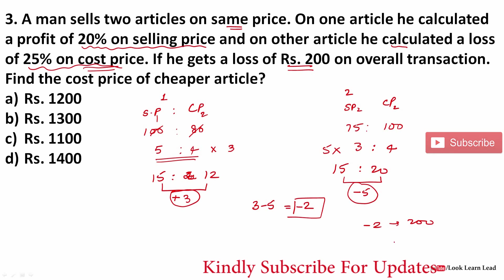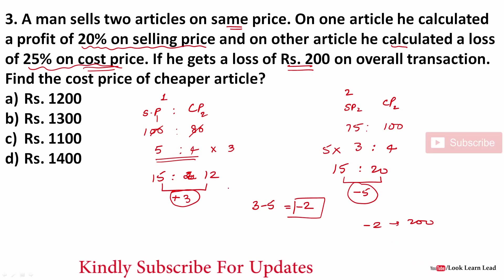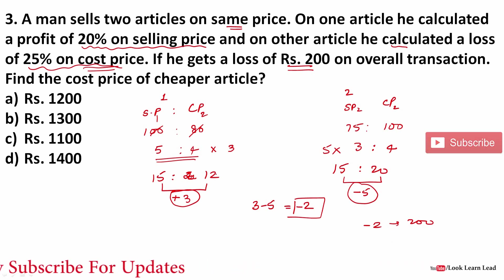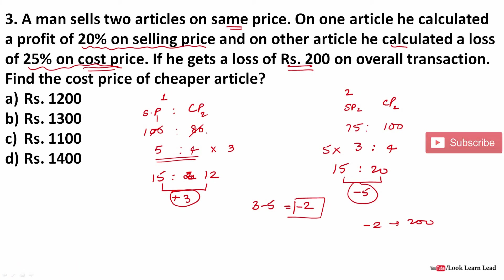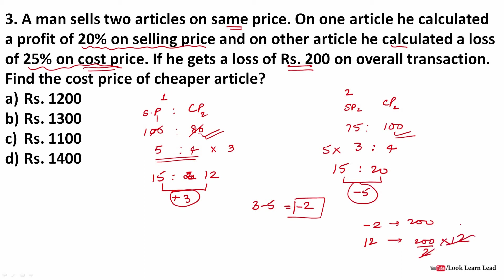We need to find the cost price of the cheaper article. The cheaper article has cost price 12 (from the ratio). If -2 equals 200, then 12 = (200/2) × 12 = 1200. So the cost price of the cheaper article is 1200 rupees. You can rewind and go through this question again for a clearer concept.